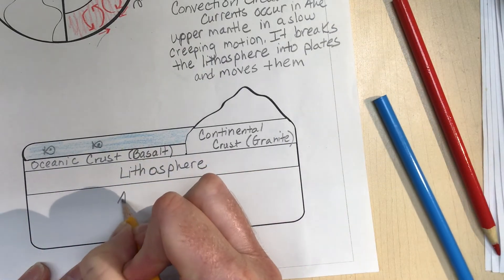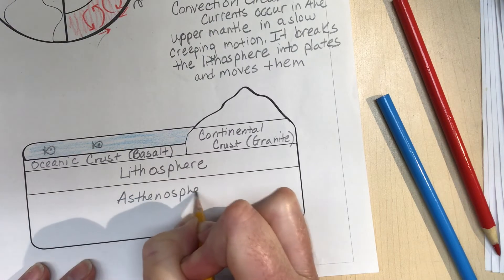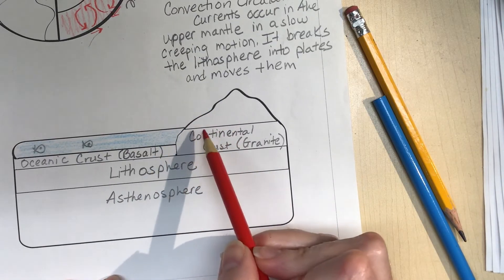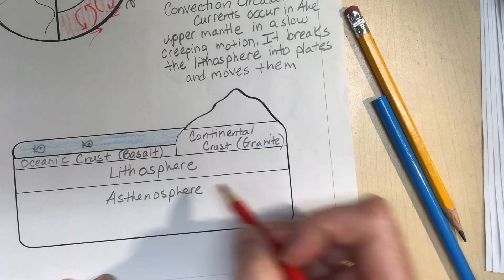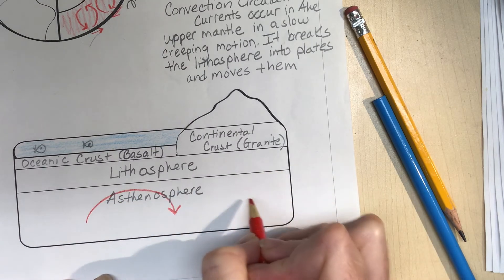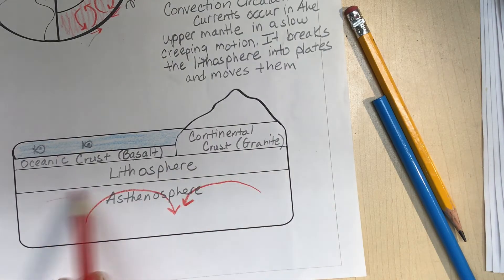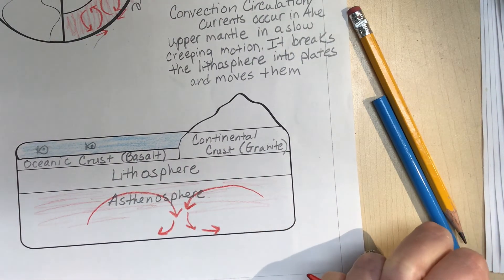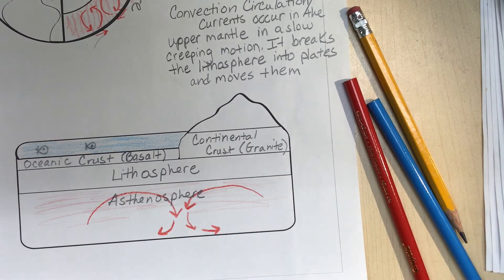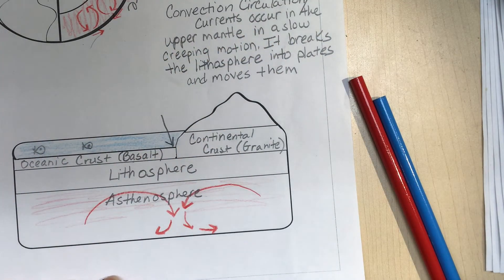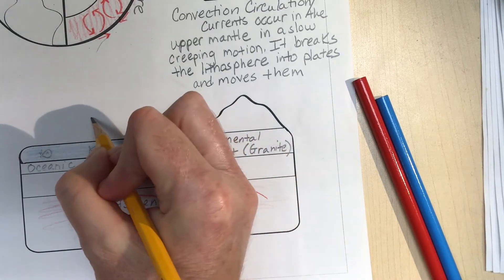The top of the mantle is the asthenosphere. If we had this plate boundary - whenever we have oceanic crust against continental crust, usually the convection currents are kind of colliding. One's going this way and one's going this way in the asthenosphere. It's all hot down here. This would be a plate boundary right here - the connection between oceanic plate crust and continental plate crust.